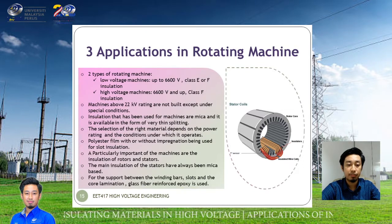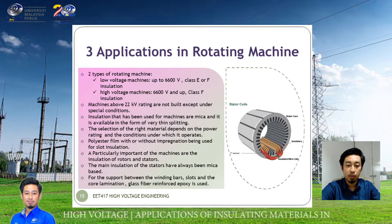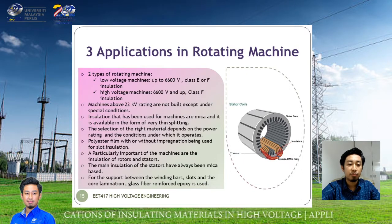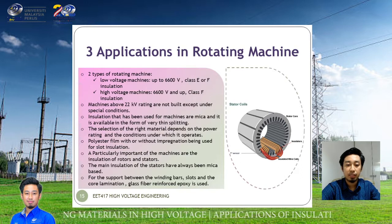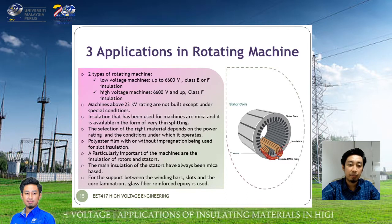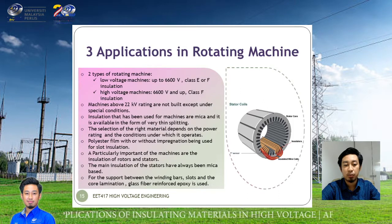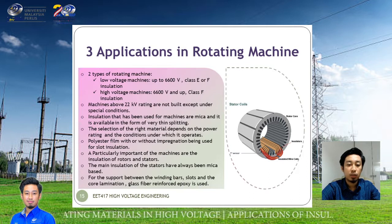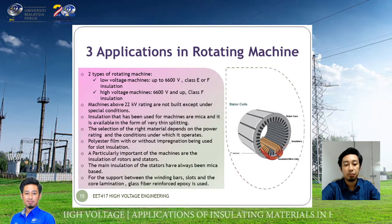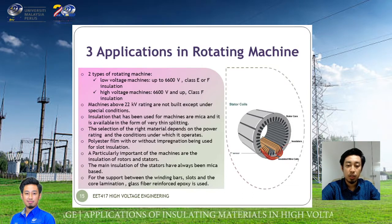You can refer back to the IEC standard for Class F insulation. Machines above the 20 kV rating are not built except under special conditions. The insulation material used for machines is mica, available in the form of very thin splitting. The selection of the right material depends on the power rating and the conditions under which it operates. Polyester film, with or without impregnation, is used for slot insulation.